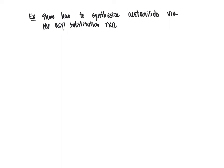One more example: show how to synthesize acetanilide via nucleophilic acyl substitution. We need to know the structure of acetanilide — it has a nitrogen directly attached to an aromatic ring, then a two-carbon group with a carbonyl, giving an amide bond. This tells us it can be synthesized via nucleophilic acyl substitution by reacting an acyl halide with an amine.